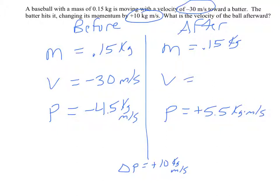So now I have enough information to find my velocity, which is what the question was asking. So I know that 5.5, the momentum, equals mass 0.15 times V, and then solving for V, basically dividing by 0.15, I get it is 36.67 meters per second.